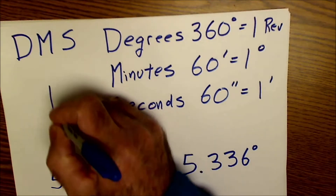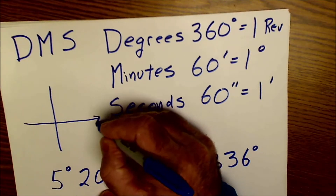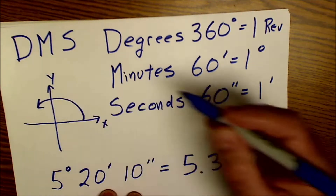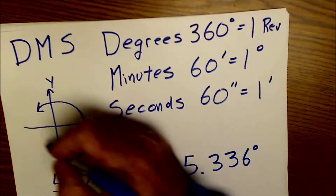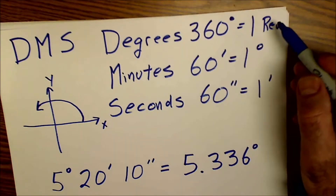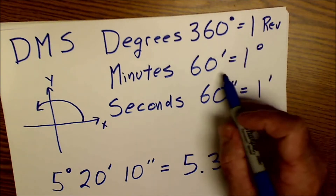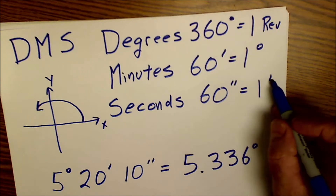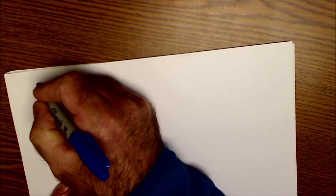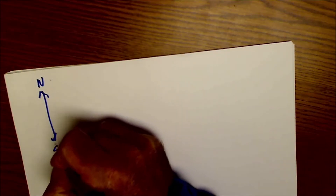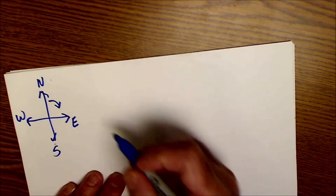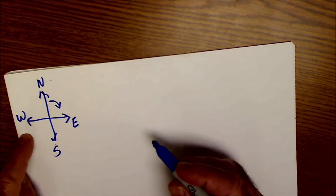To start with, everything's based on the Cartesian coordinate system. If you're talking about trig, that's X and Y. You rotate counterclockwise and one full revolution is 360 degrees. One degree is equal to 60 minutes and one minute is equal to 60 seconds, just like a clock. If you're talking about navigation, this is north, south, west, and east, and you rotate clockwise off of north. Just different systems.